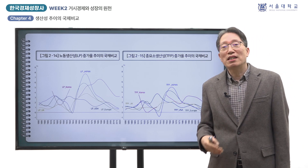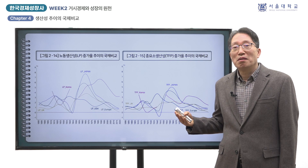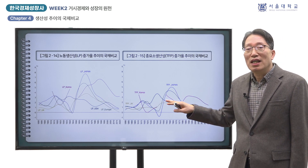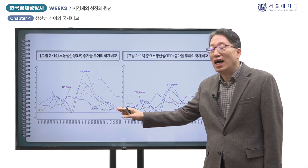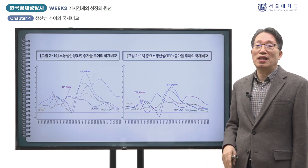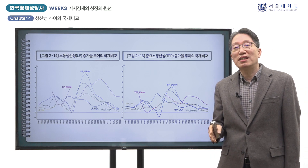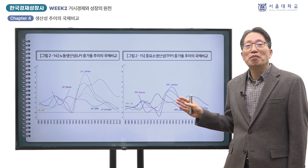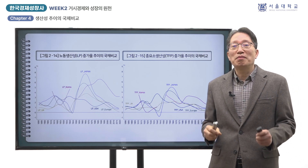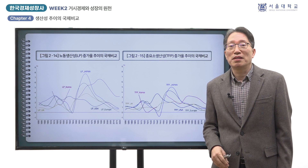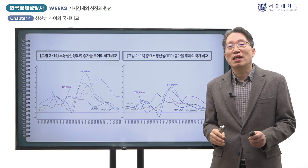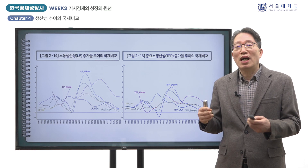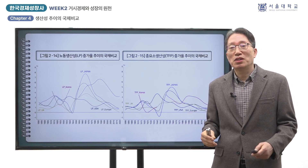한국의 생산성 증가율 추이의 특징을 보면, 먼저 LP와 TFP 증가율의 정점에 달했던 시점이 경제성장률이 가장 높았던 1970년대가 아니라 1990년대를 전후한 시기였다는 점입니다. 이는 유럽과 일본의 생산성이 전후에 급등해서 1960년대에 정점에 달한 것과 대비됩니다. 유럽과 일본은 전전에 이미 선진국에 도달해 있었고 경제성장에 기반이 되는 사회적 능력이 구비되어 있었기 때문입니다.